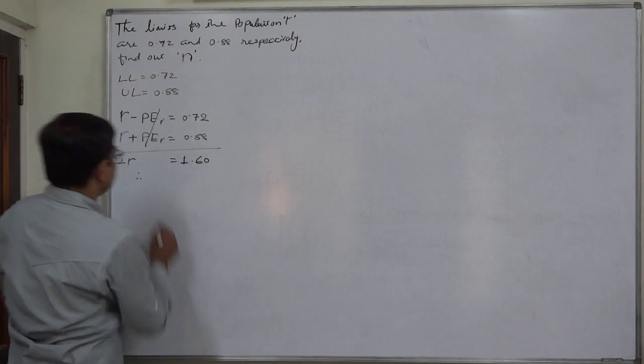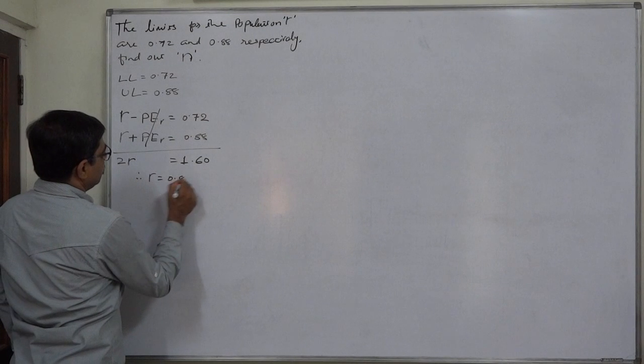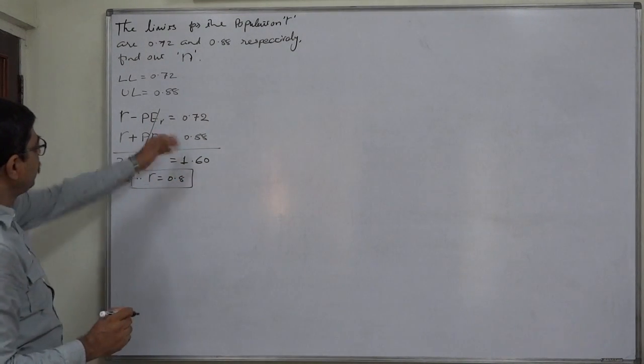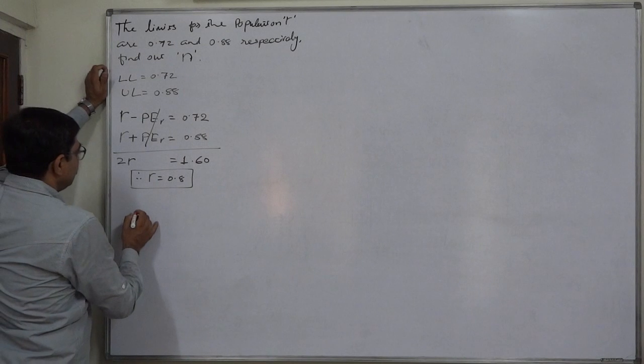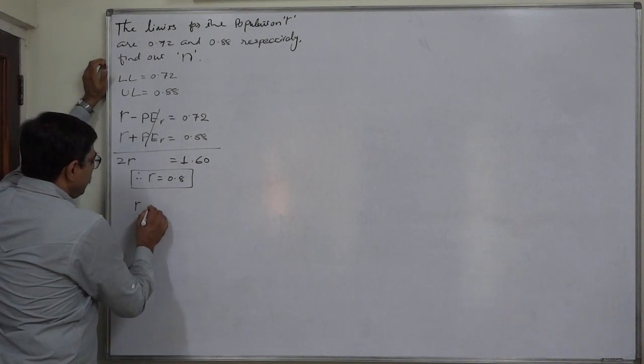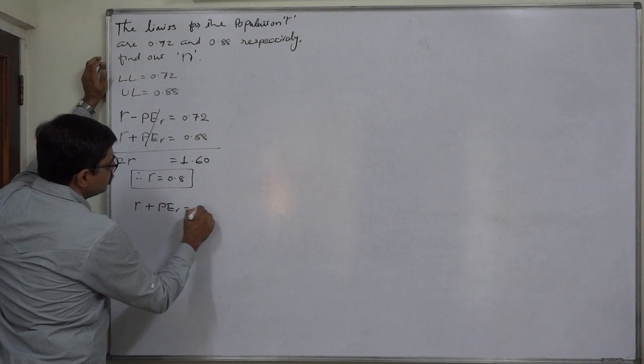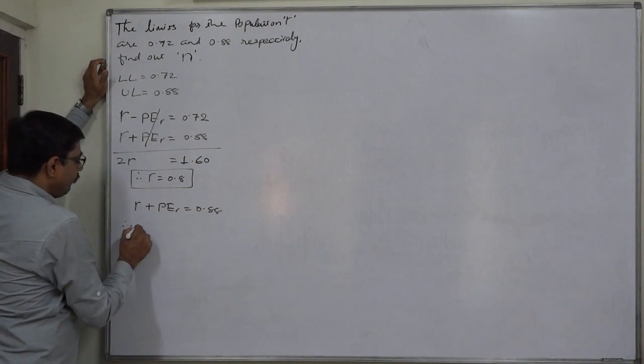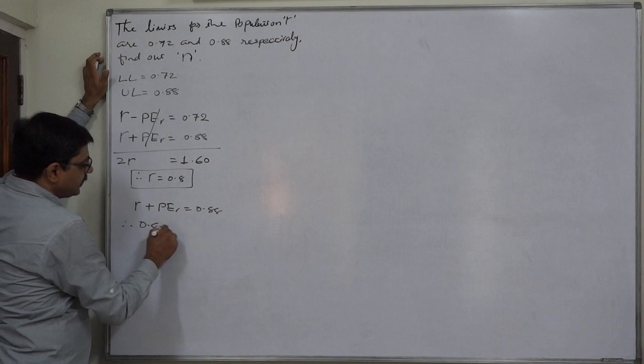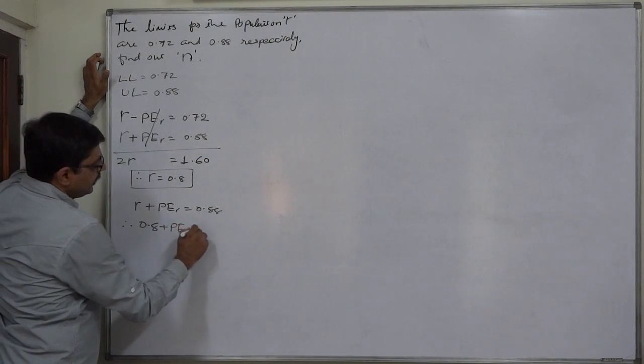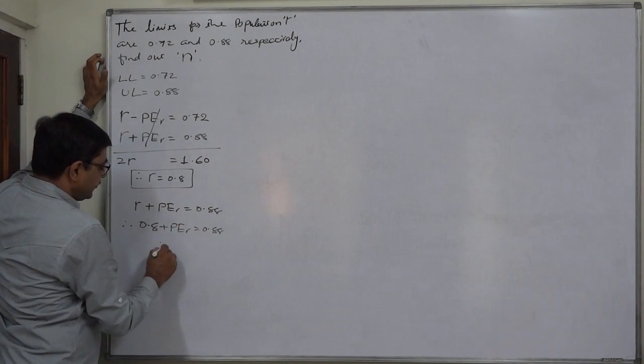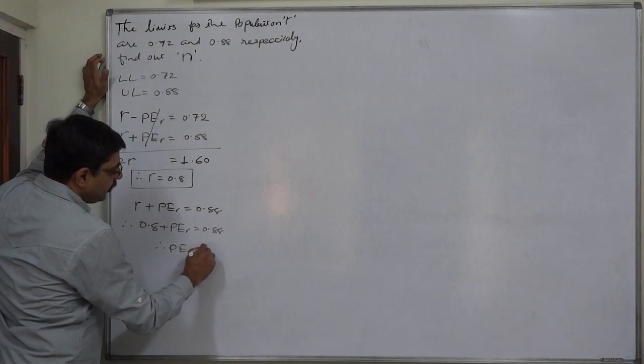Let us substitute this value in any of the two equations. Say coefficient of correlation plus probable error equals to 0.88. Now we mean that 0.8 plus probable error equals to 0.88, that means probable error is 0.08.